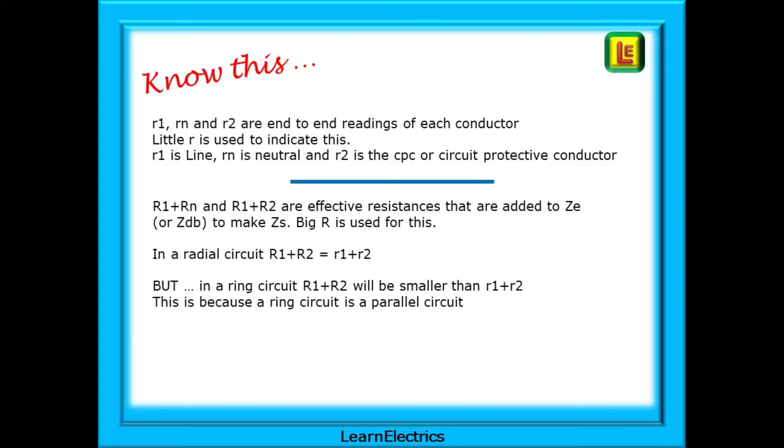Then we have the big R's. Big R1 plus Rn and big R1 plus R2 are the effective resistances that are added to the ZE or ZDB to make ZS. Big R is used for this.